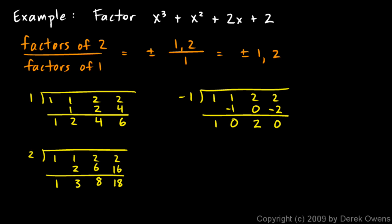So we know that x minus negative 1 is a factor. So in other words, that's x plus 1. And then the other factor comes from those numbers: x squared plus 0x plus 2. Now we can see the zeros here. Here x is equal to negative 1. And here we can get a 0 if we say x squared plus 2 equals 0.